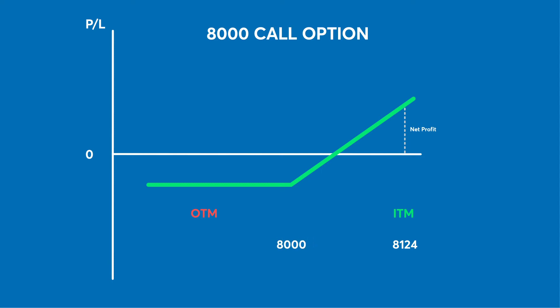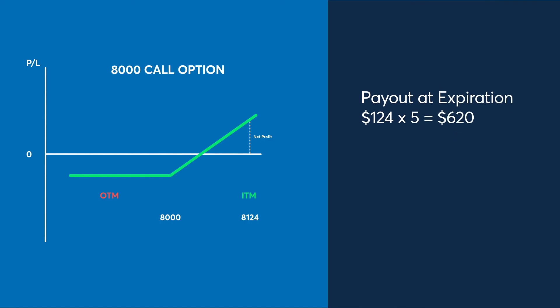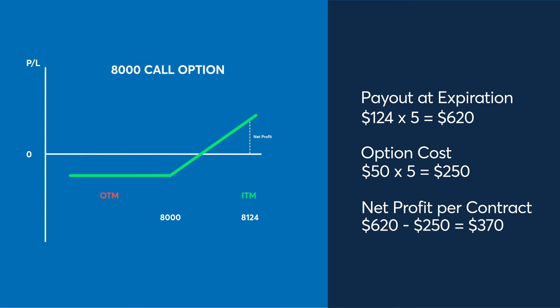This futures contract will then settle at the BRR price of $8,124. The long call option holder will receive $124 per Bitcoin equivalent, or $620 in total, as each contract represents 5 Bitcoin, making the net profit 74 points, or $370.